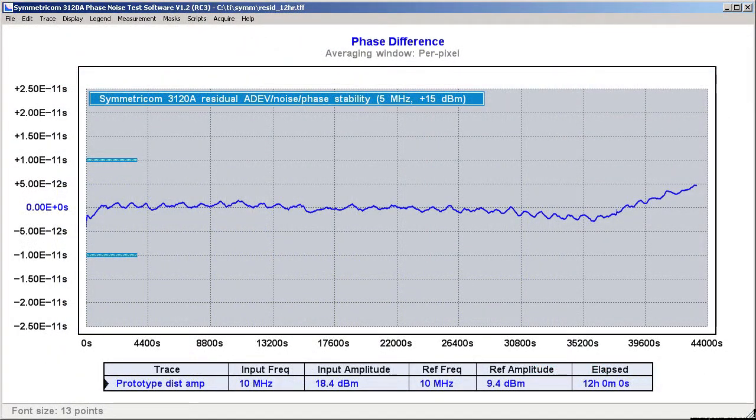This trace reveals the amplifier's long-term stability over the entire 12-hour period. The observed phase drift over that period is less than 10 picoseconds. We can see the effect of thermal cycling from the air conditioning with a period of about 20 minutes. We can't be 100% sure whether the amplifier or the 3120A itself is dominating this measurement, but in either case the performance is just superb.